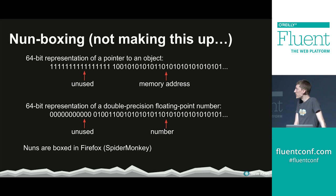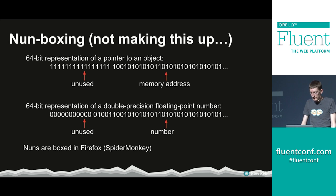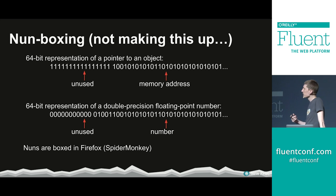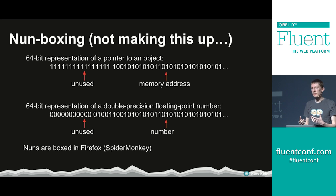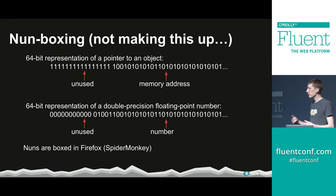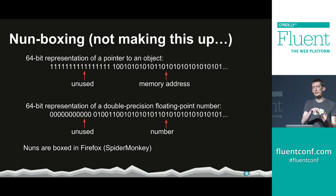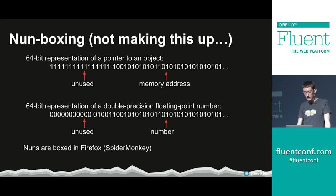Firefox — the people who brought you the name SpiderMonkey — decided to name their inversion 'NaN tagging.' They flipped the representation: a memory address is preceded by ones, and a floating point number is stored normally with zeros. Which approach you choose probably depends on what you expect to access more frequently, since the representation that uses leading ones requires a bit mask operation before you can use the value directly.